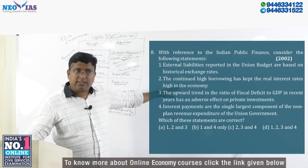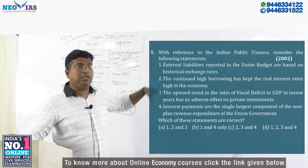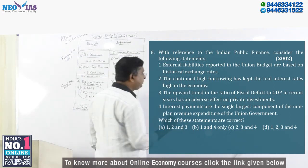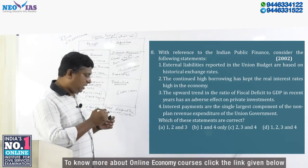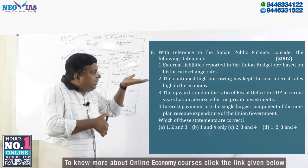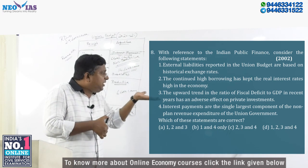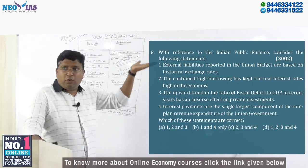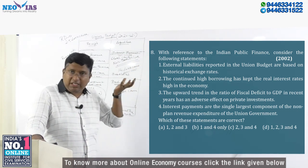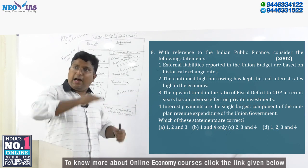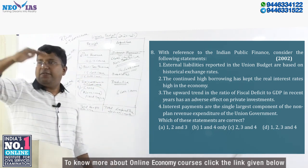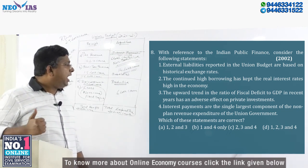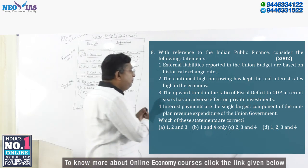The statement is also correct. This question is very important because it's conveying a lot of knowledge. So the second statement is also correct. We can eliminate B. Third: the upward trend in the ratio of fiscal deficit to GDP — what does it mean? Upward trend means more borrowing. Fiscal deficit is the borrowing of that particular financial year. So continuously there is an increase in the fiscal deficit to GDP in recent years — this has an adverse effect on private investment.